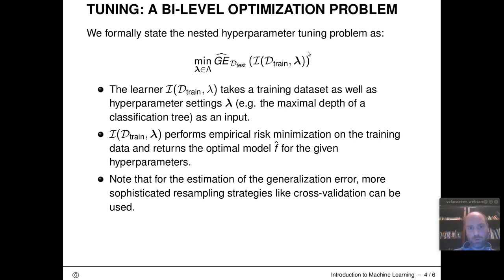But in order to define this lambda vector here, we have to wrap this around with an optimization problem. Also note that I've written down the most simple version here on the slide where I just do simple train and test splitting to measure the generalization error. A more realistic version of the whole thing would actually define this for more sophisticated resampling strategies like cross validation.